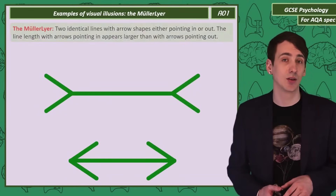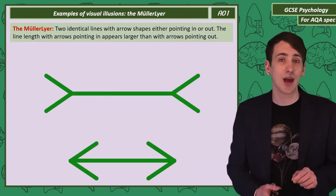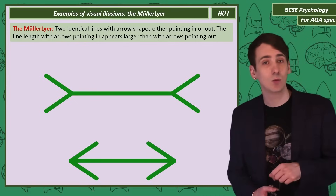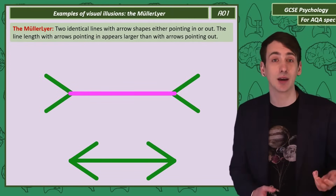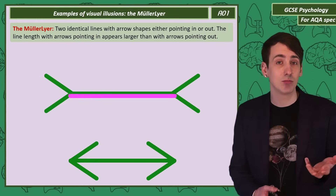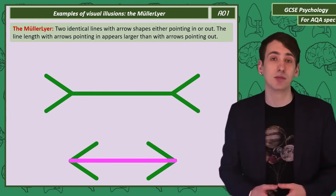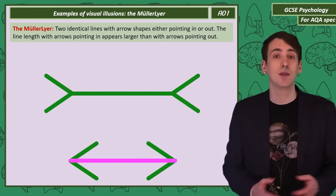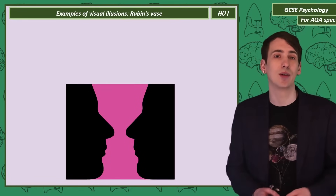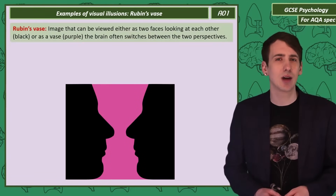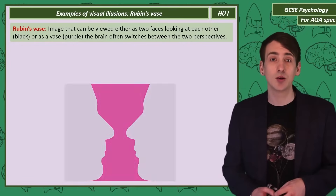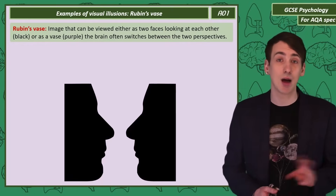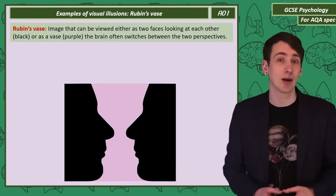Next, the Muller-Lyer. Here are two identical lines, but at the end there are arrows pointing either in or out. Again the top line should appear bigger, but when I move it down you can see it's just the same length. This illusion is called the Rubin's Vase. The image should either look to you like a vase or two faces looking at each other, and your brain should be able to switch back and forth between each perspective.